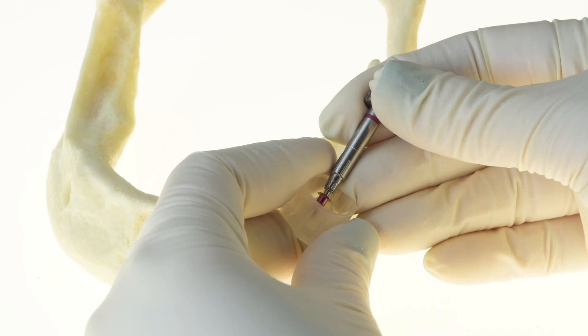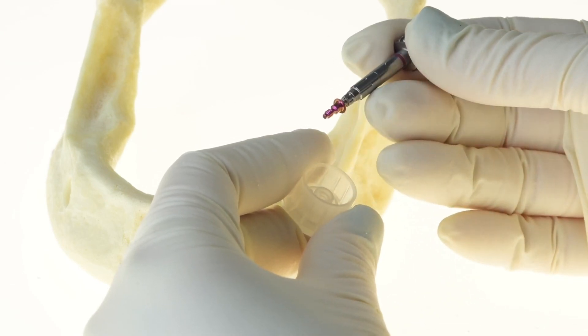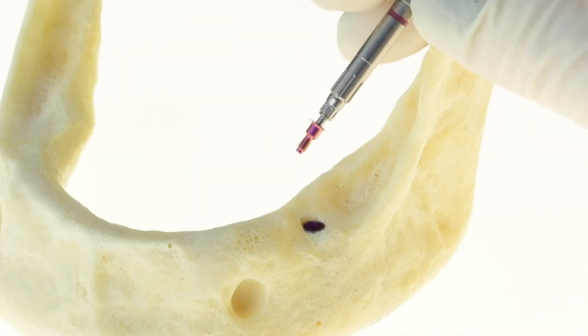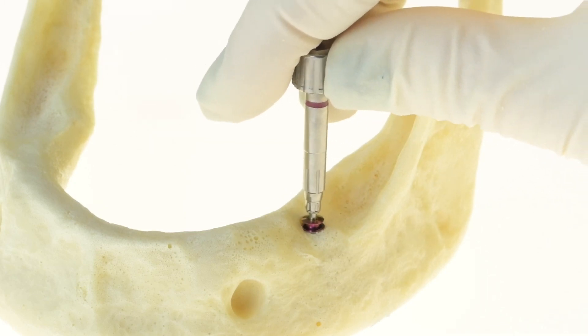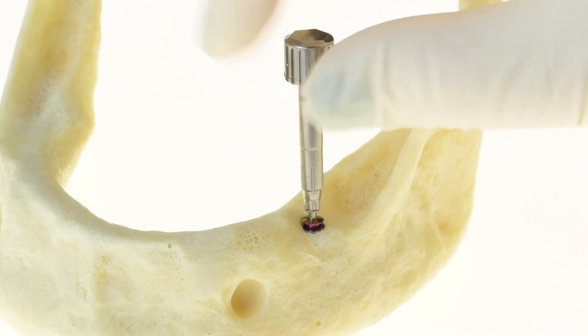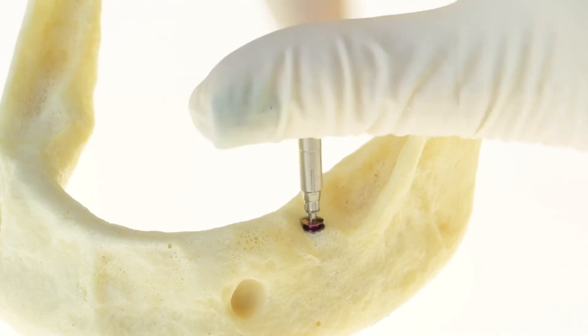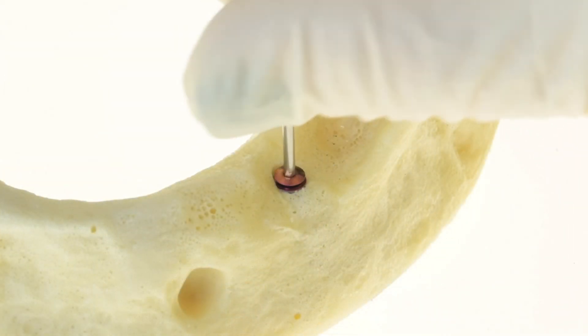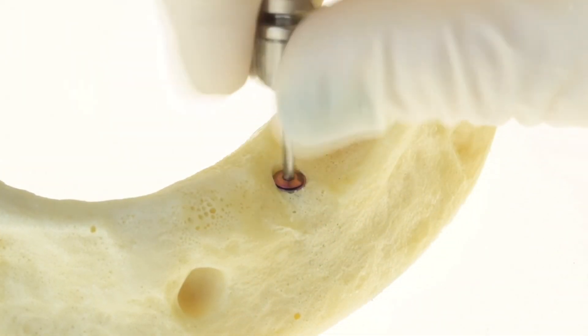After placement of the implant, use the insertion tool to remove the cover screw from the packaging and place it into the implant. To complete the procedure, use a screwdriver to tighten the cover screw onto the implant.